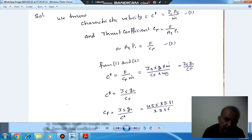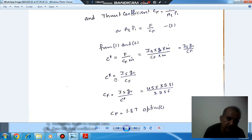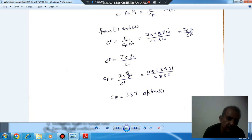So M dot will cancel out, so it will be ISP times G divided by Cf. So C star will be ISP times G by Cf, or Cf will be ISP times G by C star.